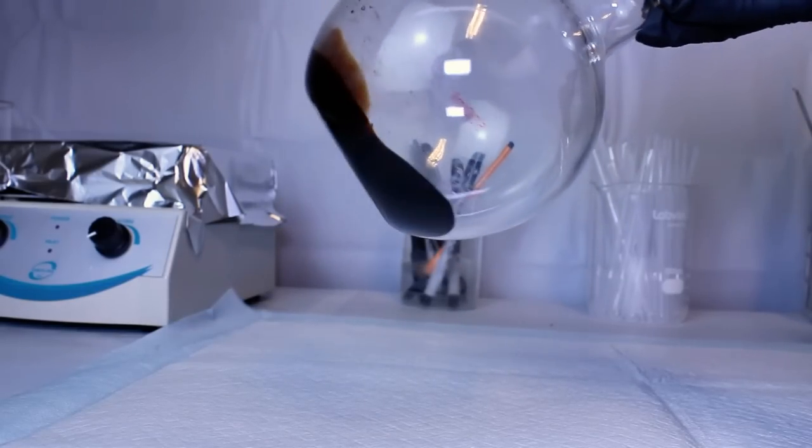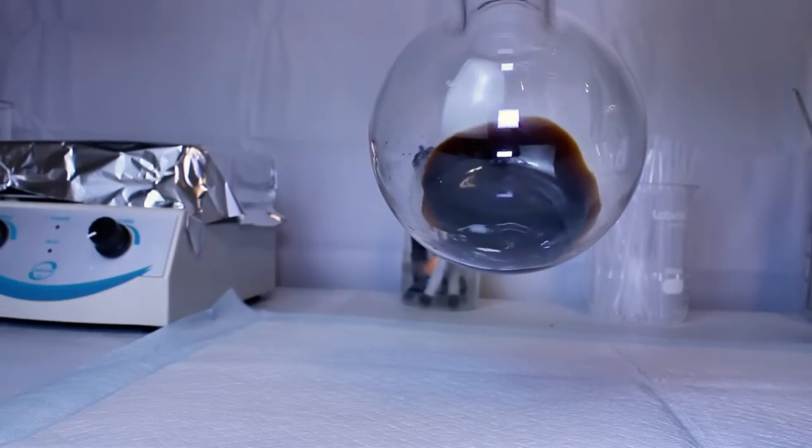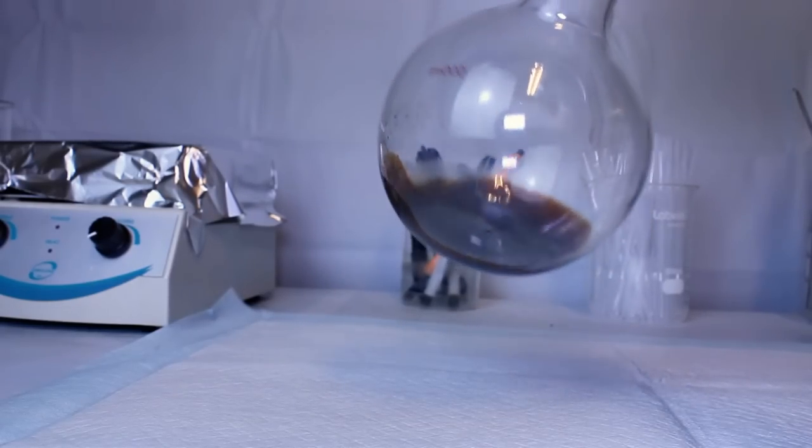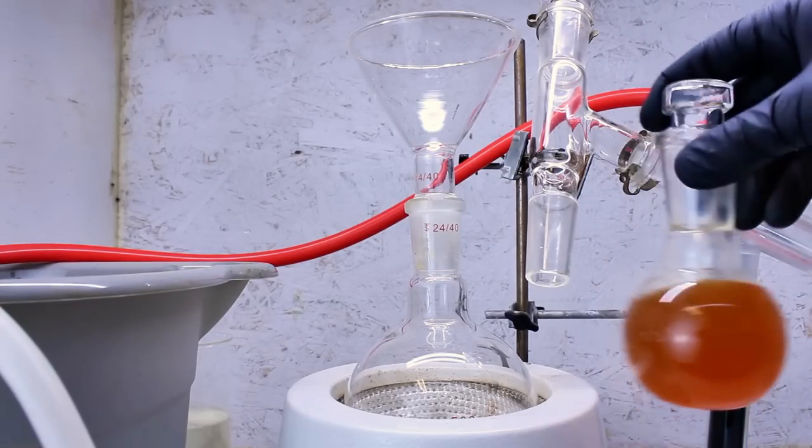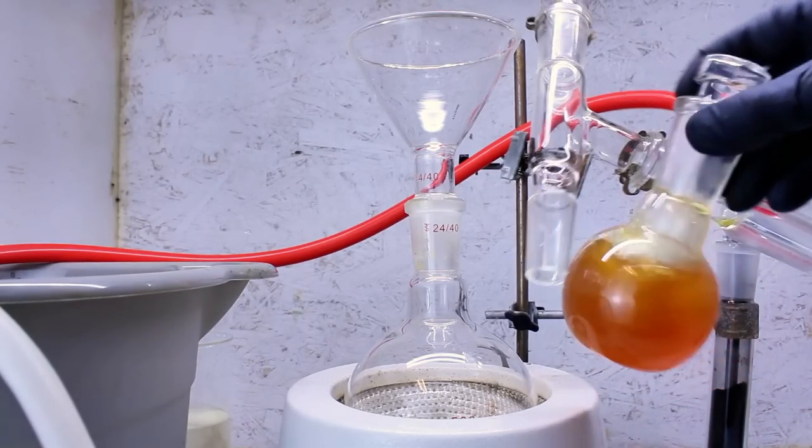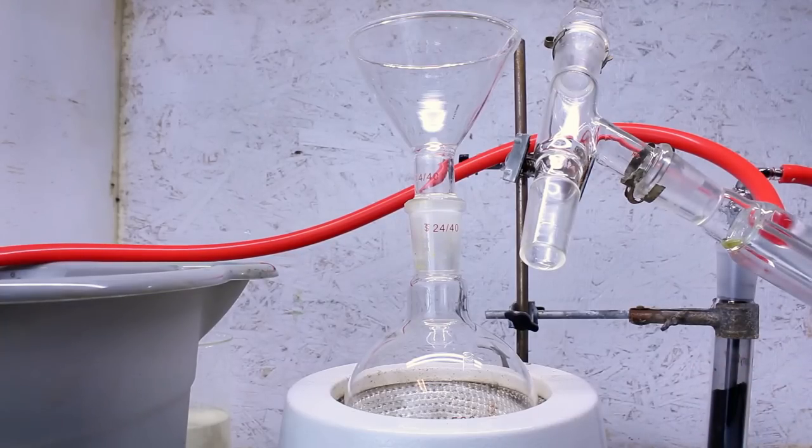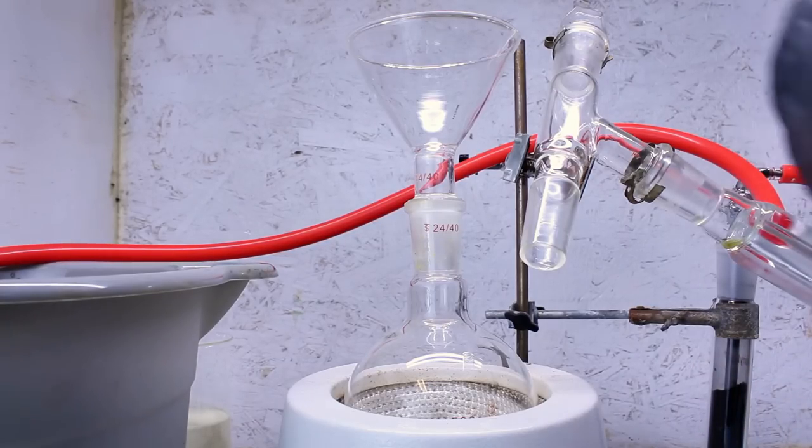If purity is not a problem, you can pretty much be done here. For my purposes, however, purity is important, so the final step is to remove those toxic byproducts I talked about earlier. To do this, I'm simply going to carry out a second distillation of my crude styrene, which is a distinct orange color for some reason.